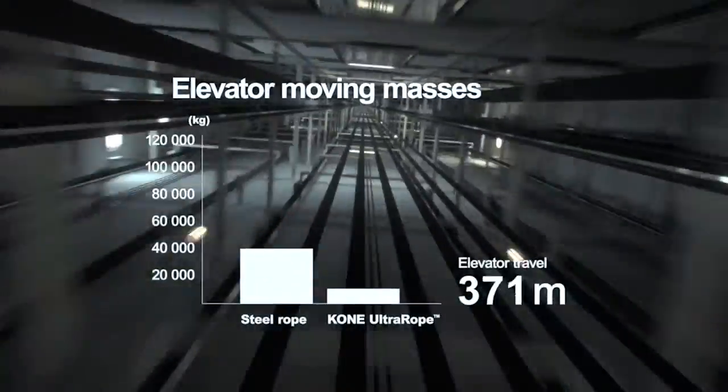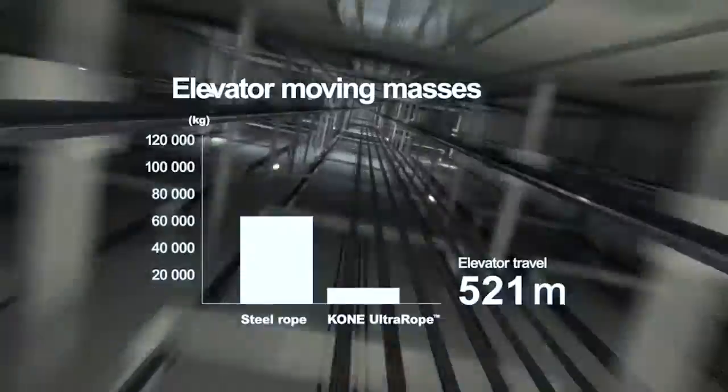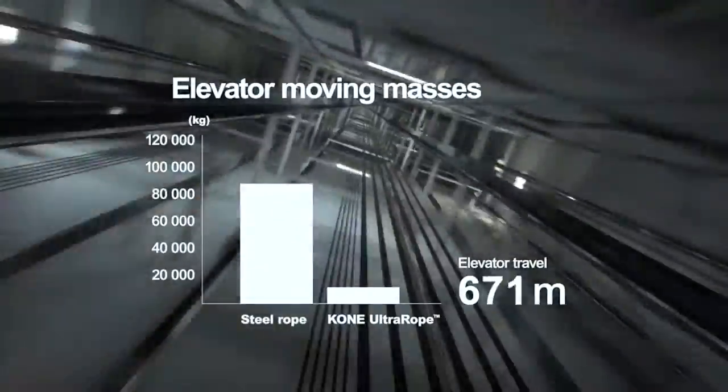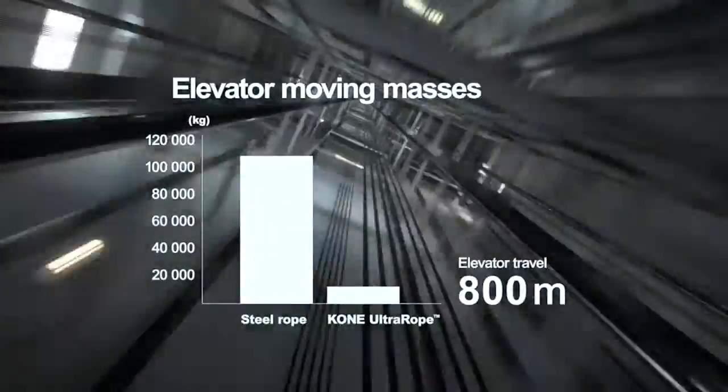Moving masses can be reduced by 90% and energy consumption by 45% for an elevator with a travel height of 800 meters. Cone Ultra Rope will take elevators higher than they've ever been before.